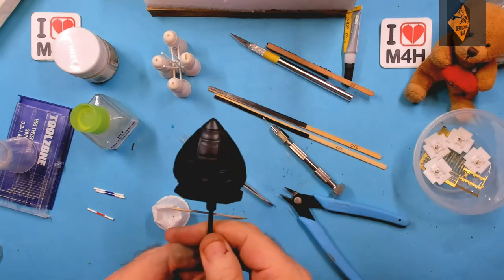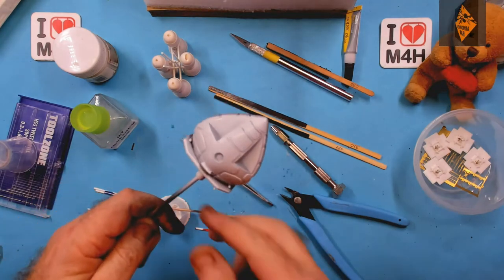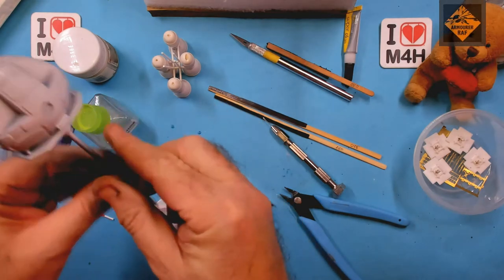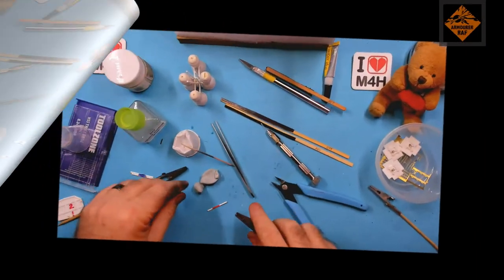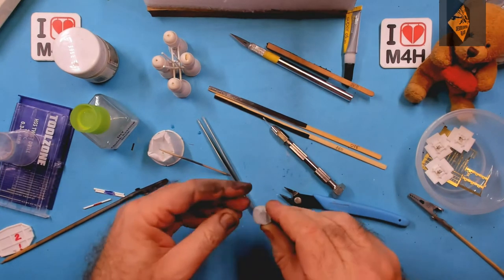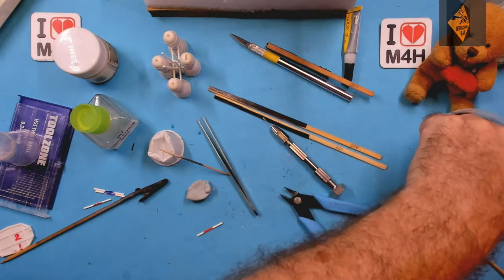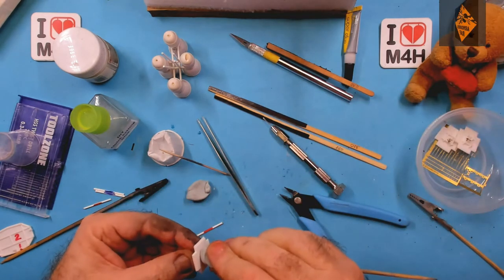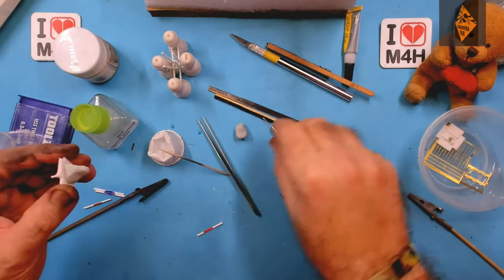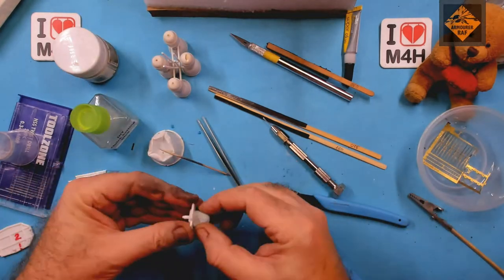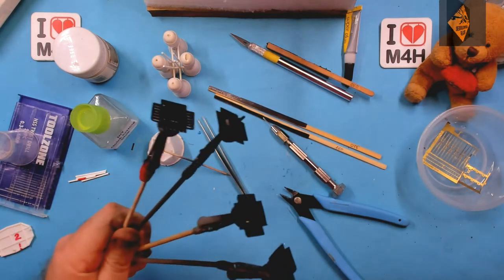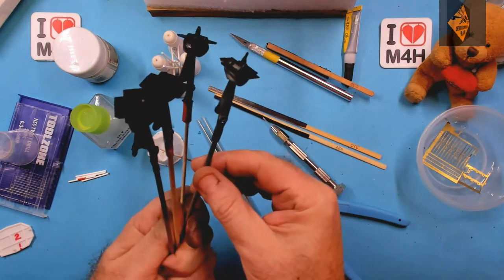Now, to give the cockpit a quick zenithal highlight. And as if by magic, there you go. Now, to prep the landing gear for priming. I'm using my homemade clips with a dob of blue tack. Remember people, other sticky substances are available. Right, so that's the landing gear all nicely primed.